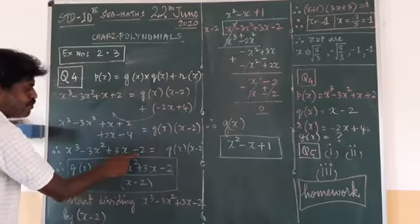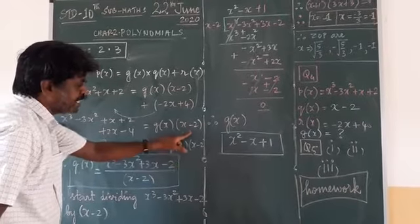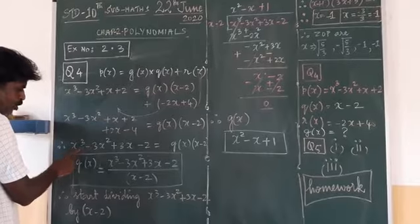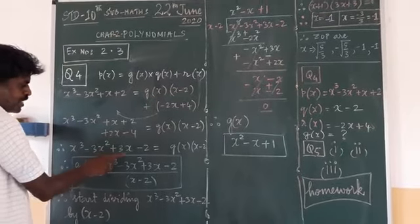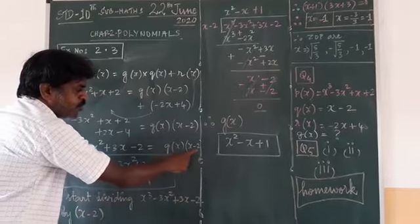After simplification, I am bringing plus 3X minus 2. That is equal to G of X, X minus 2. After simplification, X cube minus 3X square plus 3X minus 2 equals G of X into X minus 2.